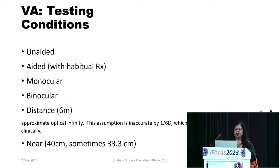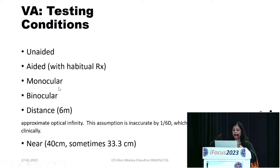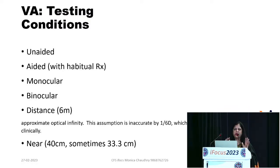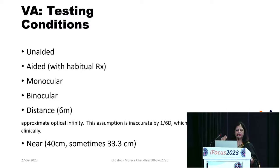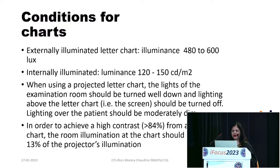When testing visual acuity, always record unaided vision, habitual (aided) monocular and binocular vision. Do not miss binocular — a drop in binocular acuity compared to monocular is significant and indicates pathology. Six meters is the preferred test distance as it approximates optical infinity.